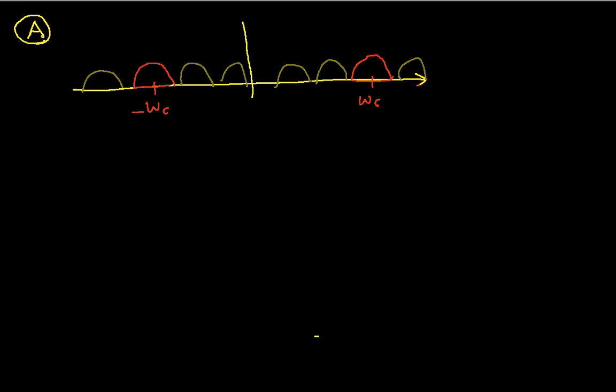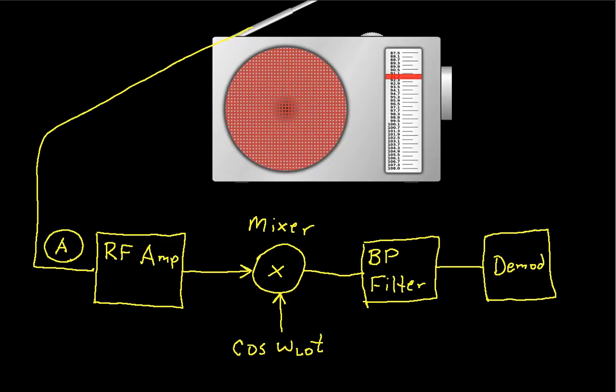And so that brings us to the next step. If we go back to our diagram of the demodulator or the radio, I have what I call an RF amplifier. The RF amplifier takes the signals coming in from the antenna, which sometimes are very small, can be millivolts or less, and amplifies them.